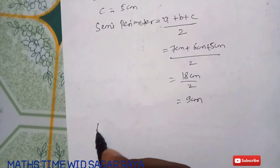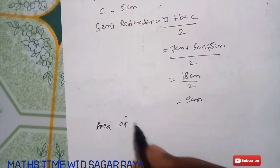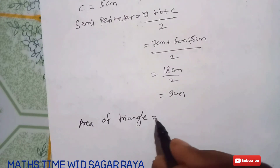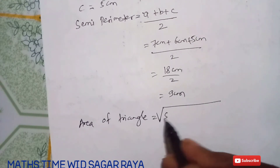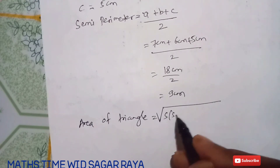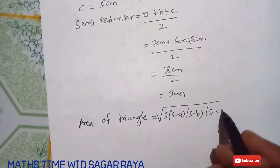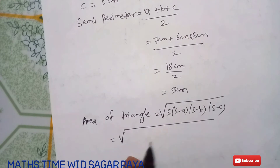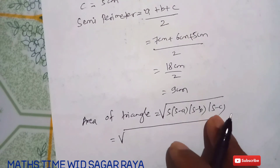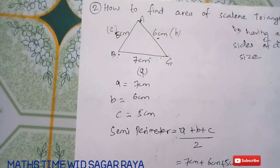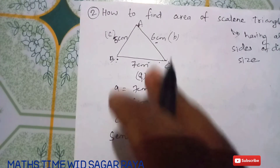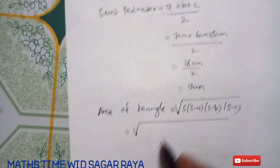After finding the semi-perimeter, we use Heron's formula: Area = √(s × (s−a) × (s−b) × (s−c)). You have to memorize this formula so that you can find the area of any scalene triangle.